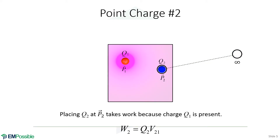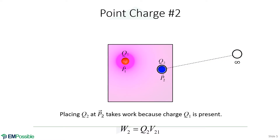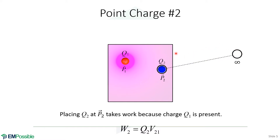Now let's move the second charge into place. Something different is happening here — the first charge is already in place, and depending on whether they're positive or negative, it could either attract the second charge to help move it along, or repel it, fighting us. Borrowing from the previous equation, the work to move the second charge into place is Q₂ times the potential difference. Since the potential at infinity is zero, the potential difference is just the potential at point two due to the first charge — that's why we have the subscript 2,1: V₂₁ is the potential due to the first charge at the position of the second charge.